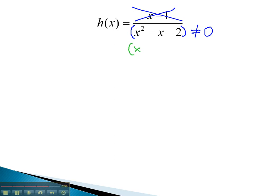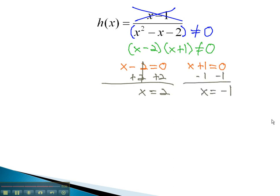We can quickly find this by factoring to x minus 2 times x plus 1, knowing that cannot equal 0. Setting each factor equal to 0, x minus 2 equals 0, and x plus 1 equals 0. We can quickly solve by adding 2 to get x equals 2, and subtracting 1 to get x equals negative 1.